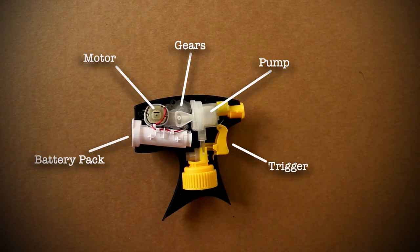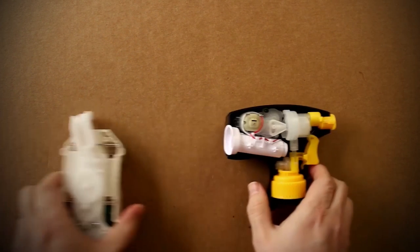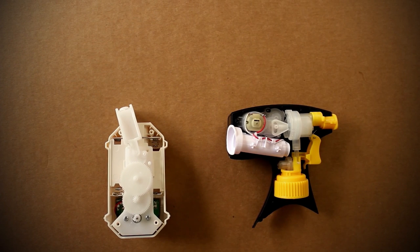Pressing the trigger connects the power from the batteries to the motor, which activates this spraying device. Now bringing back the air freshener, let's see how we can combine these two to make them work.